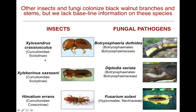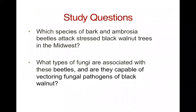We know that there are other insects and fungi that colonize black walnut branches and stems, but we lack a lot of baseline information on these species with regard to thousand cankers disease. There are a number of scolytine beetles, like the invasive Xylosandrus crassus and Psiloborhinus sexiniai, and some cossonine beetles. We also know there are other fungal pathogens that can affect black walnut, like Botryosphaeria dothidea, Diplodia seriata, and Fusarium solanii, but we don't know the extent to which these might interact with Geosmithia morbida to affect tree health.